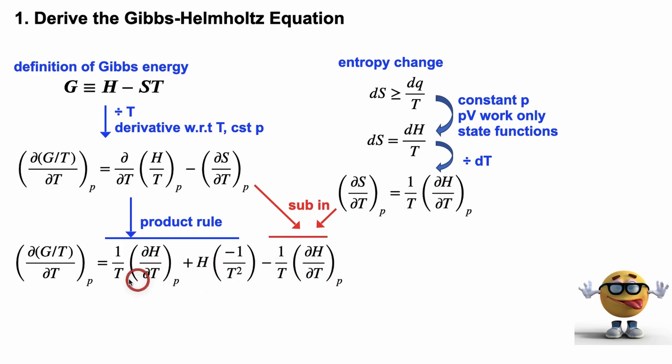Now the reason we did this, even though this looks complicated, it's pretty nice because we can cancel this first, the first and third term right here. They're exactly the same. They're equal and opposite in sign. So if they cancel, we're left with this equation right here.